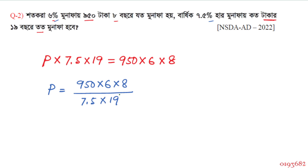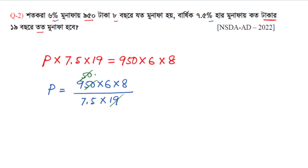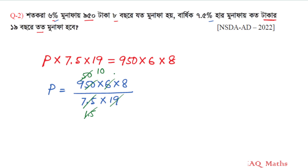Working through the calculation: we get 55 as an intermediate value, and 1.5 as another factor. So 6 divided by 1.5 equals 4. Then 4 × 8 = 32, giving us 320. The final answer is 320 taka.